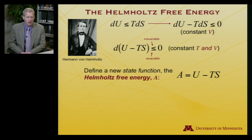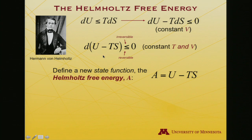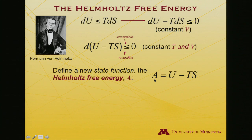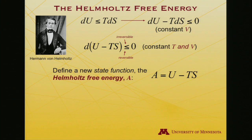The total differential of U minus TS is dU minus T dS, since we are at constant temperature so dT is zero and the chain-rule term drops out. Because these are state functions, the Helmholtz free energy must also be a state function. Thus, at constant T and V, dA equals d(U − TS) is less than or equal to zero: less than zero for spontaneous processes, and equal to zero at equilibrium.